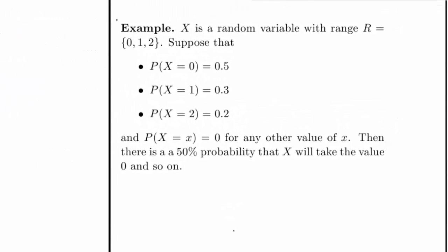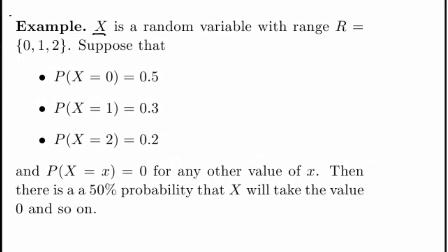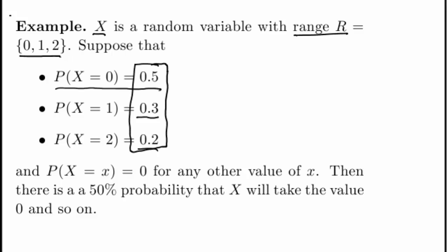Here's an example. I have capital X, which is my random variable. Its range is 0, 1, and 2. Look inside this X box — no pun intended — and you will only see the numbers 0, 1, or 2. Nothing else. For each of these three possible values in the range, there is a probability. So if P(X=0) is 0.5, then looking inside the X box, there is a 50% chance that I'll see the number 0. There's a 30% chance that I'll see the number 1, and a 20% chance that I'll see the number 2. These three numbers add up to 100%, which they must.